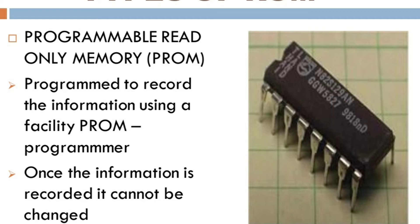This type — Programmable Read-Only Memory — is the most common memory type and is cheap in cost compared to other types of ROM. This makes it accessible for general use.